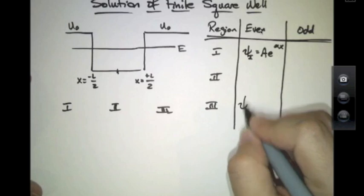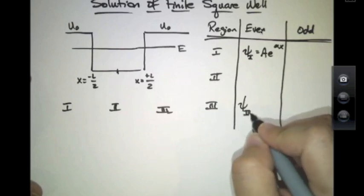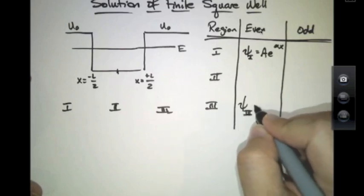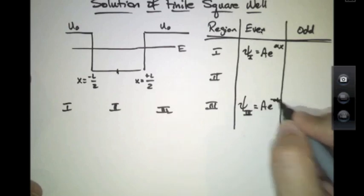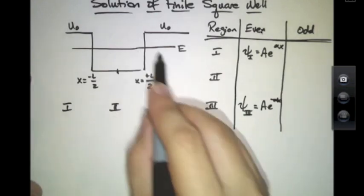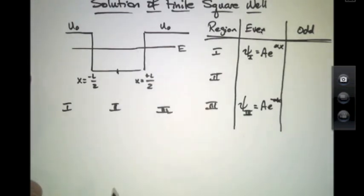Then for the even solution, psi 3 should also look like e to the alpha x, except of course it'll be e to the minus alpha x. So I need it to be damped as x goes to plus infinity.